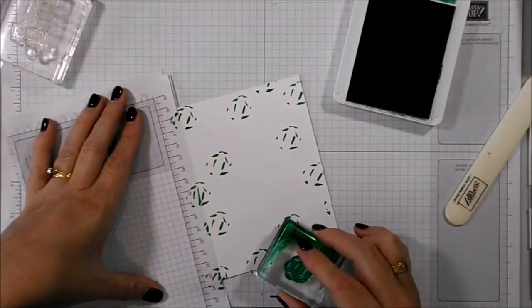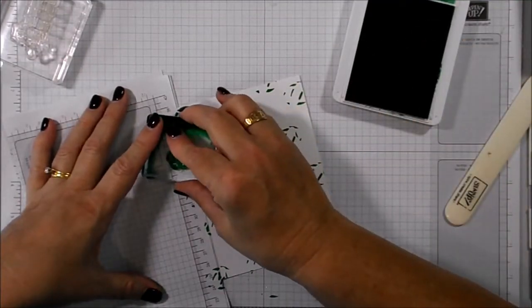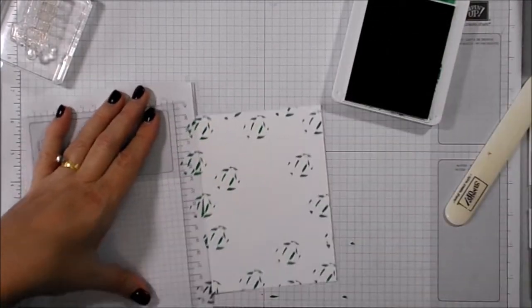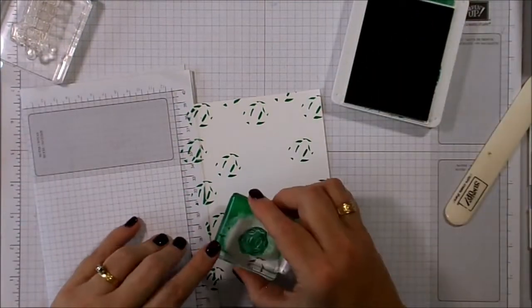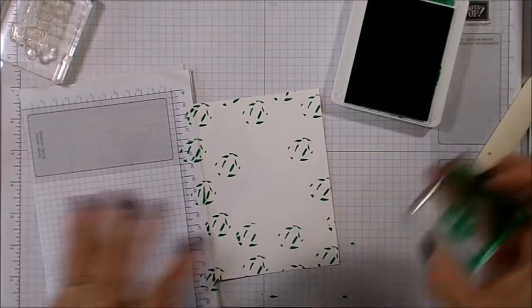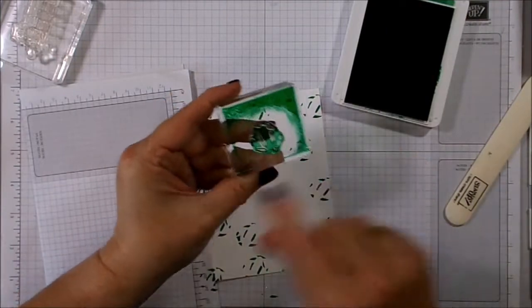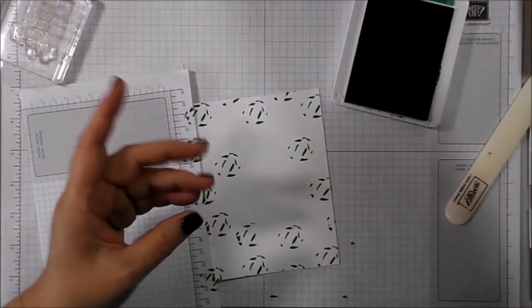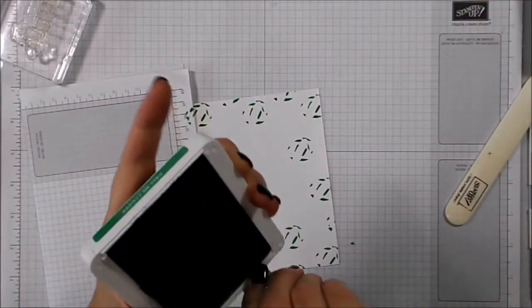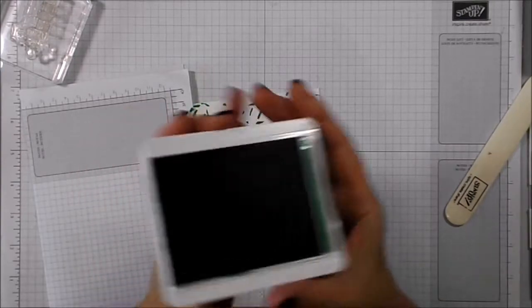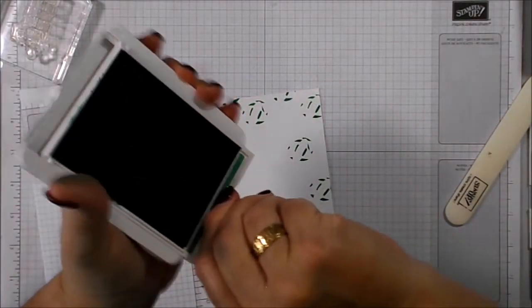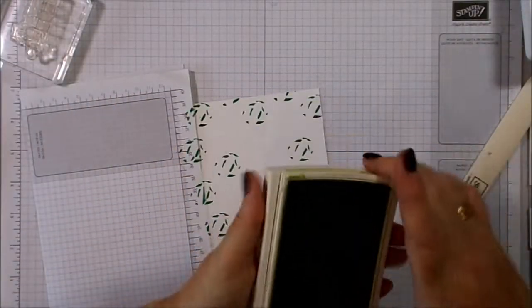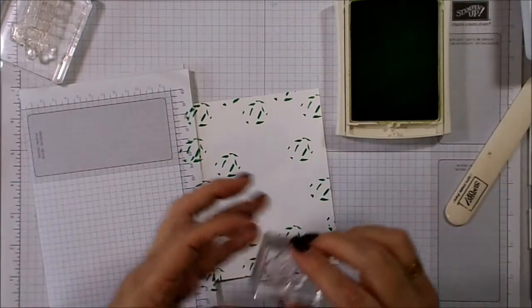And I'm just going to stamp all over the edge of this card. Now, I'm not doing the middle because the middle will actually be covered by our layering piece. So I'm just putting this around the edges. I want to make sure that it's well and truly covered here. Okay. And I might just put another one there. That one's going to overlap a bit. But see what I mean? Because I've put it in the middle and tapped, I've got a very juicy pad. So I've got ink all over that. That's going to take a while to clean off.